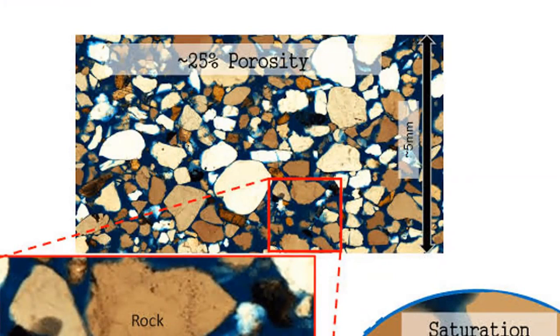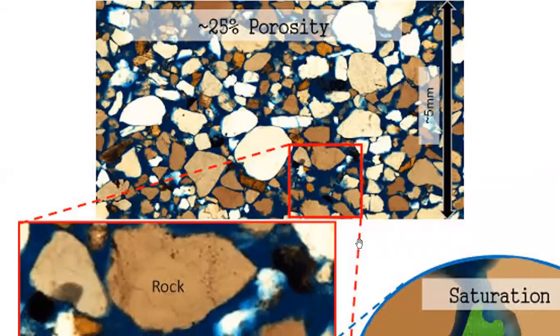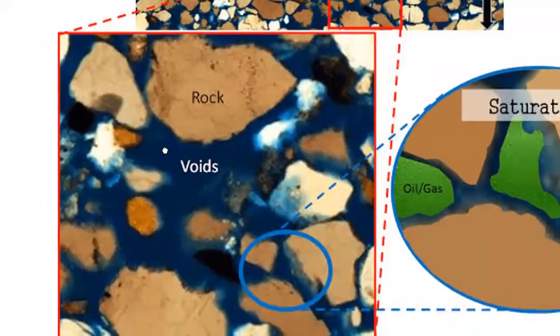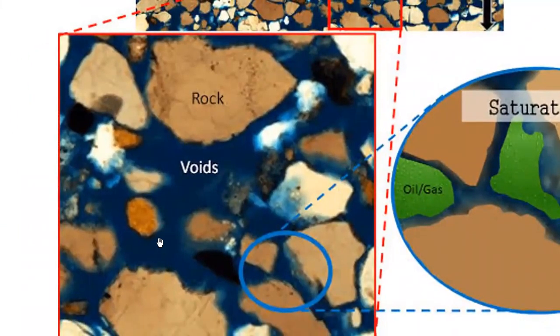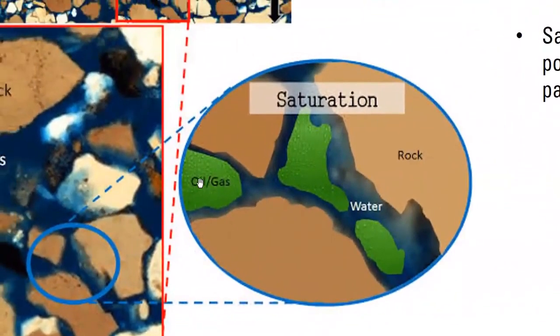The pores are not empty; they are filled with fluid. The fluid can be water, oil, or gas. If you zoom in, you can see the rock grains and the voids. The voids are the pores, and they are filled with something. If we zoom in again, you can see oil or gas and water filling these pores.